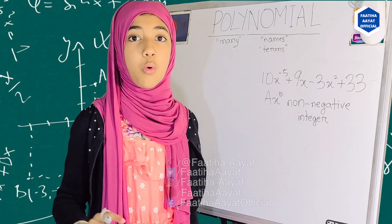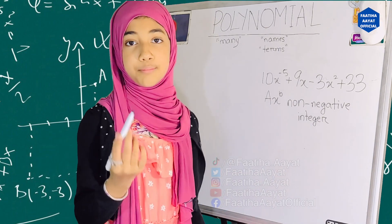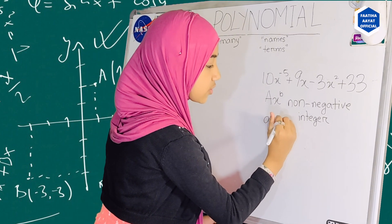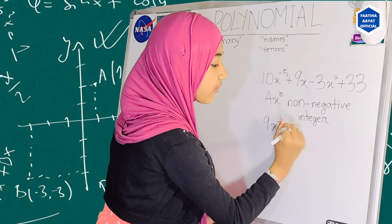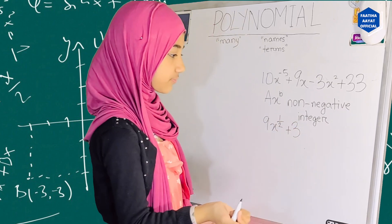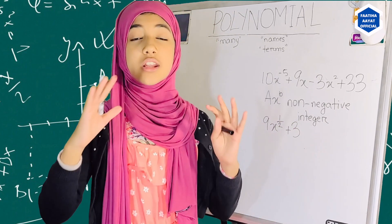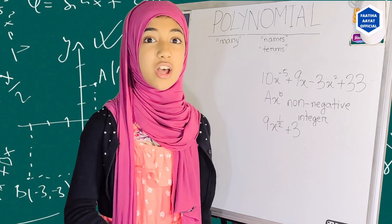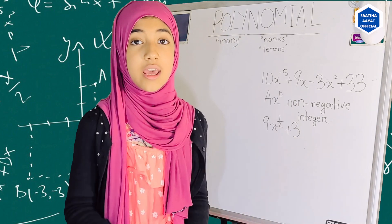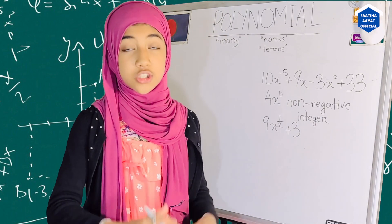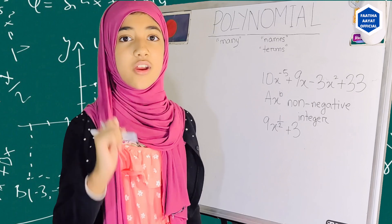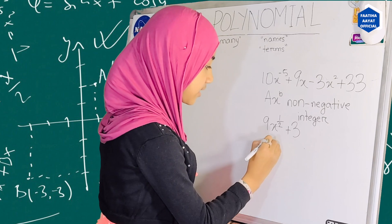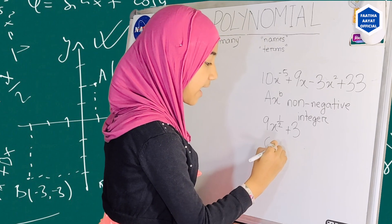Let me give you two more examples of what are not polynomials. Let's say we have 9x to the power one-half plus 3. This is also not a polynomial because the power here is not an integer — it's a fraction. It has to be a whole number, which is also an integer.